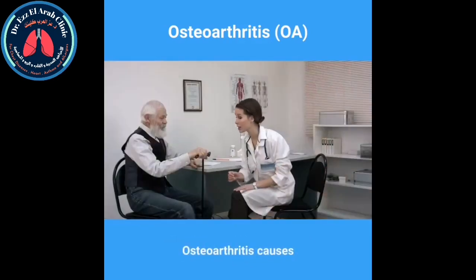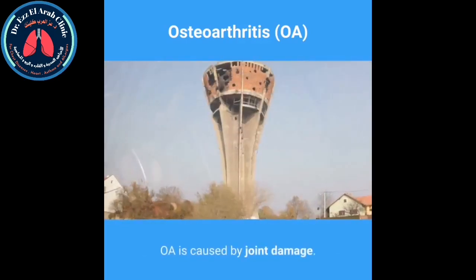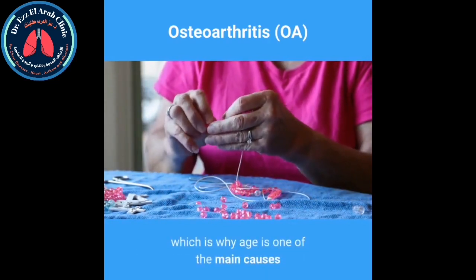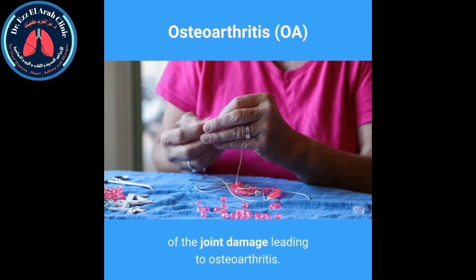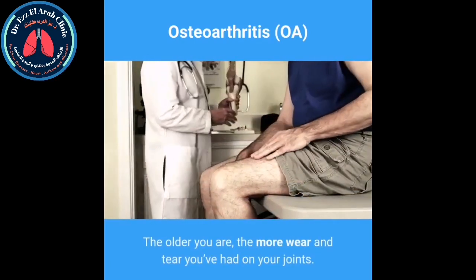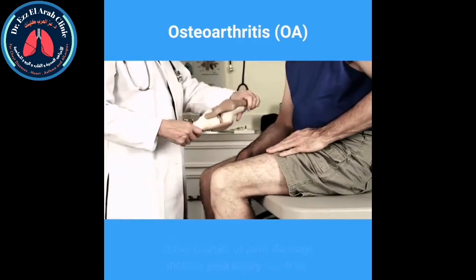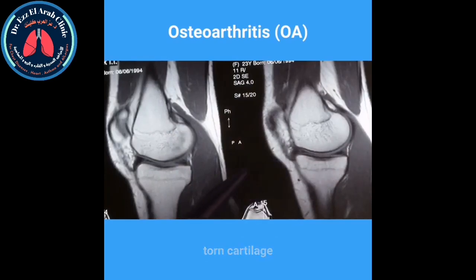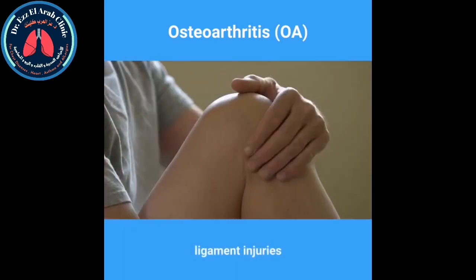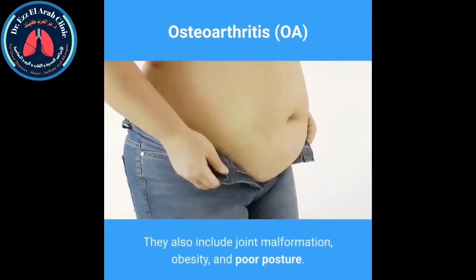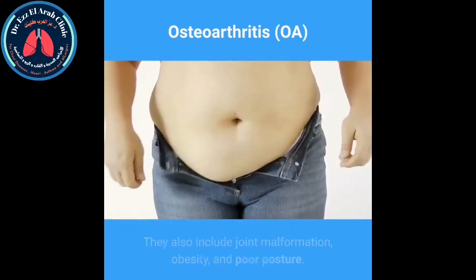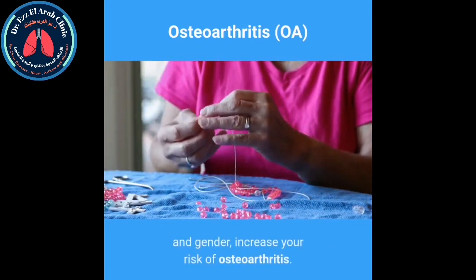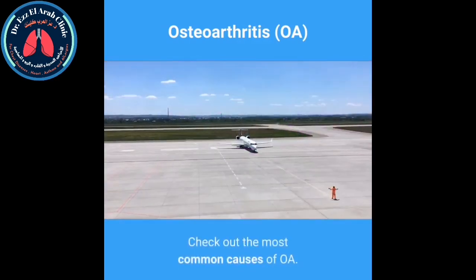Osteoarthritis causes. OA is caused by joint damage, which can accumulate over time — which is why age is one of the main causes. The older you are, the more wear and tear you've had on your joints. Other causes of joint damage include past injury such as torn cartilage, dislocated joints, and ligament injuries. They also include joint malformation, obesity, and poor posture. Certain risk factors such as family history and gender can also increase your risk of osteoarthritis.